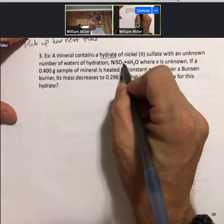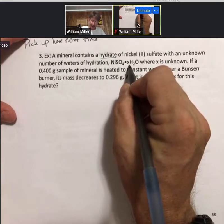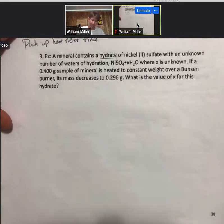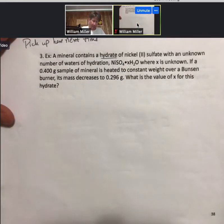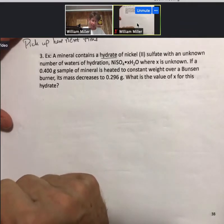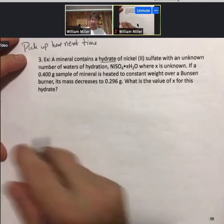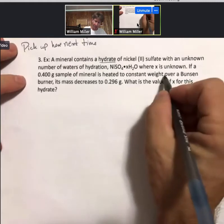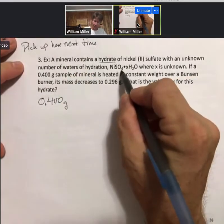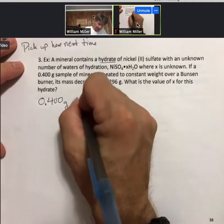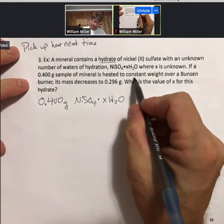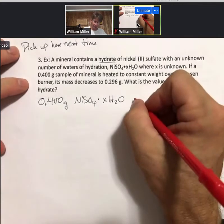A mineral contains a hydrate of nickel(II) sulfate with an unknown number of waters of hydration. You write the formula for nickel(II) sulfate as NiSO₄·xH₂O, and these H₂O's with some number where x is unknown are called the waters of hydration. If a 0.400 gram sample of the mineral is heated to constant weight over a Bunsen burner, its mass decreases to 0.296 grams.